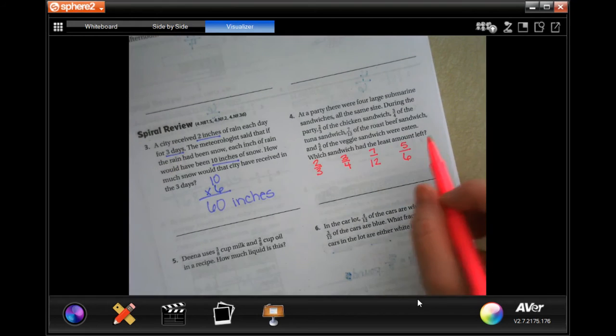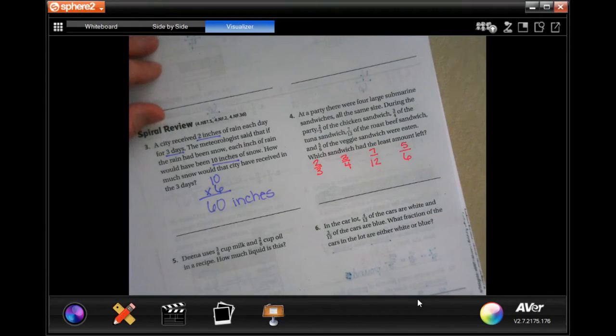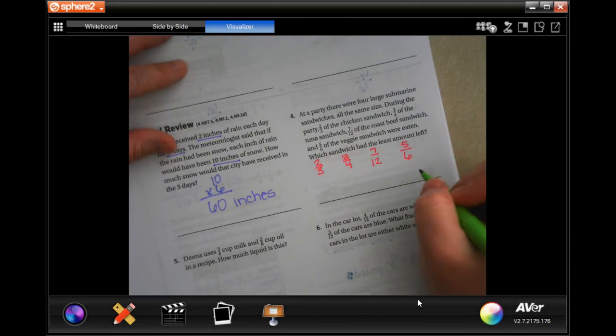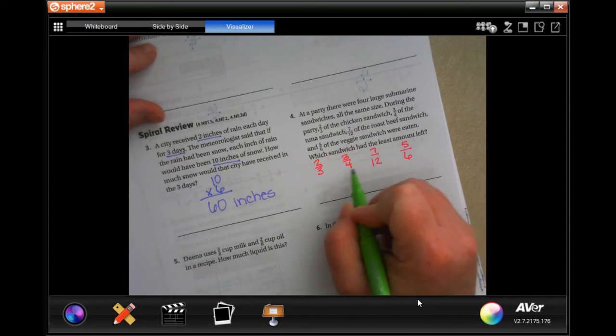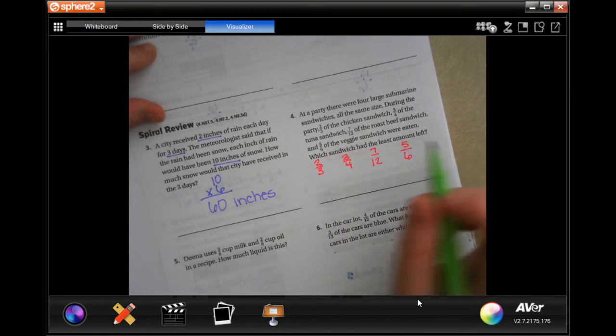Remember, we're looking for the smallest. So, in order to get all common denominators, the smallest number that they're all going to have in common is going to be 12. 3 goes into 12, 4 goes into 12, 6 goes into 12.